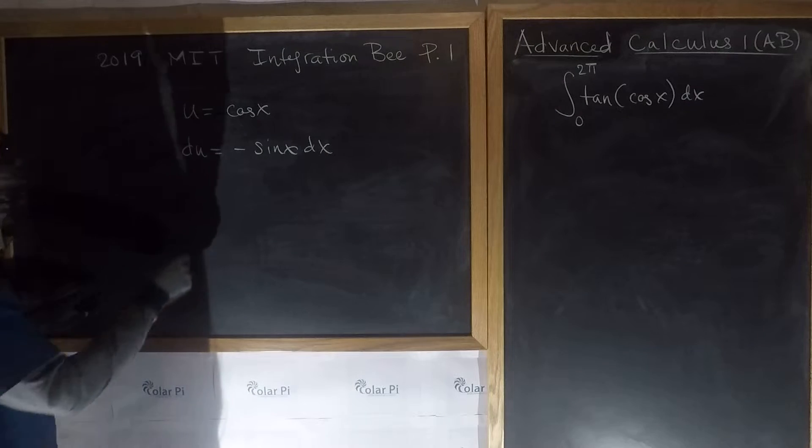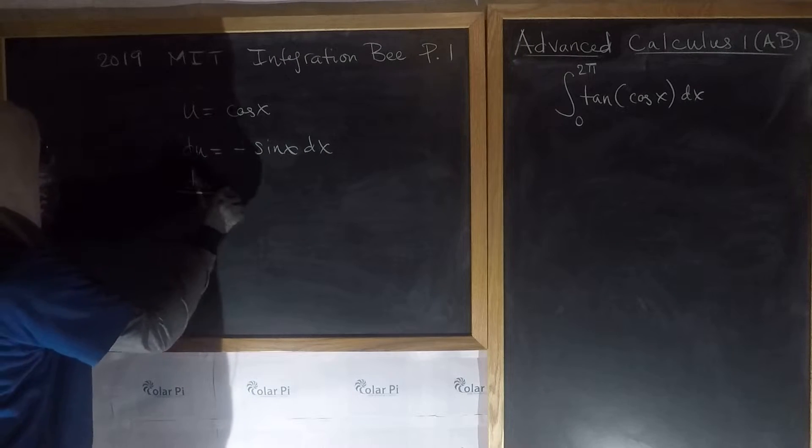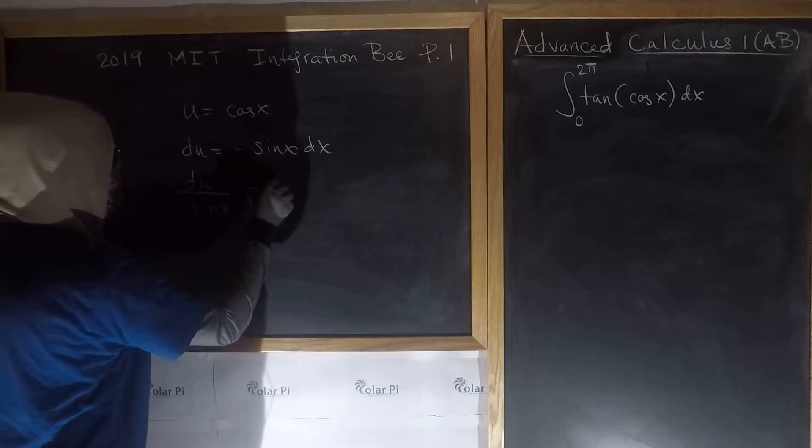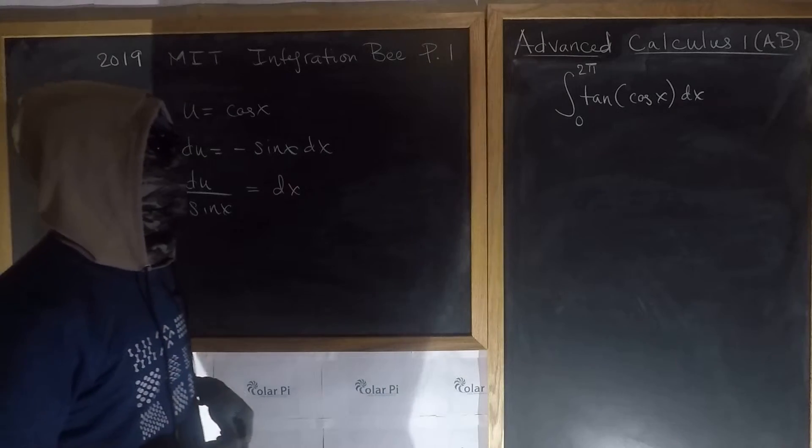And from here we have to solve for dx, so we get du divided by negative sine x equals dx.